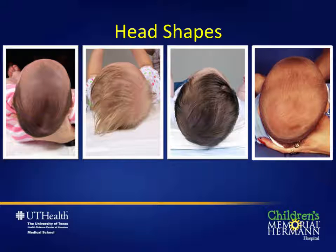Children can present with many different patterns or shapes to their skulls. Some of these patients will need surgery to correct their head shape and some will need non-surgical therapy. Differentiating the causes for these head shape changes can be extremely difficult. While each of these heads is different in shape, an understanding of the anatomy and the forces acting on them will help clear up some of the confusion surrounding their diagnosis and care.